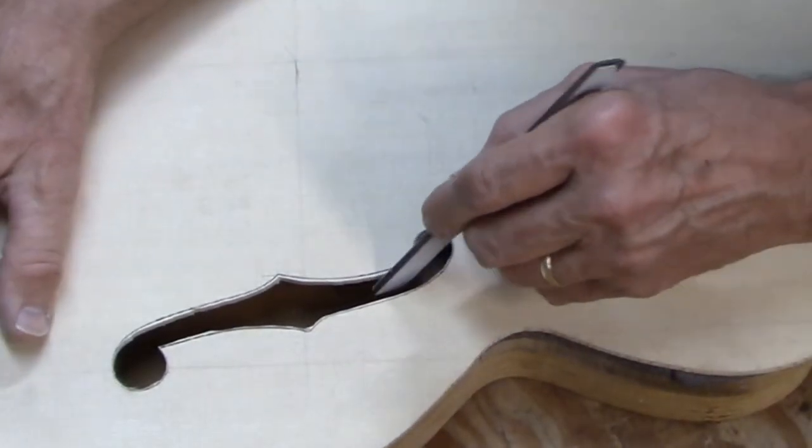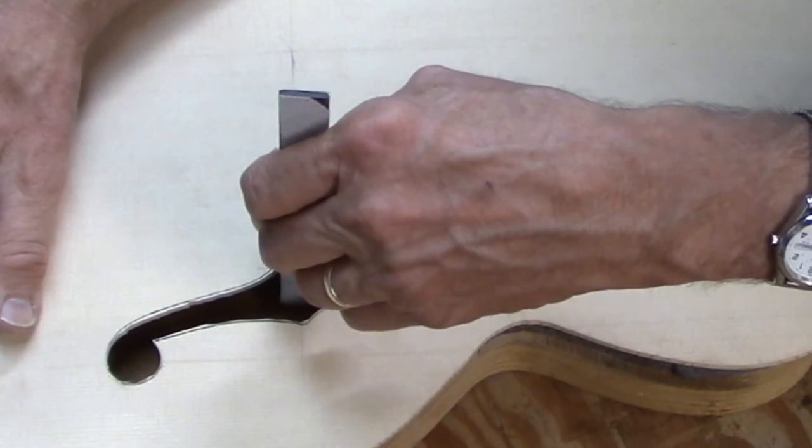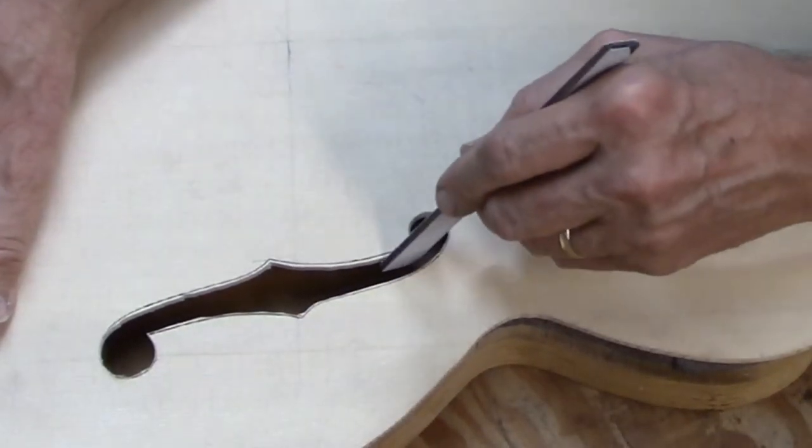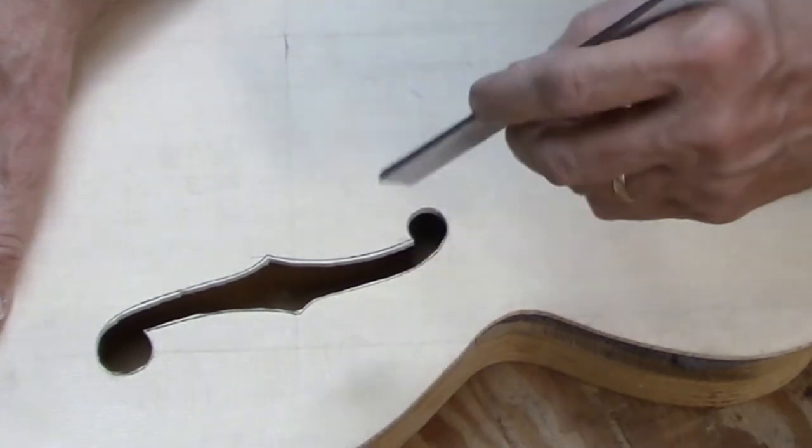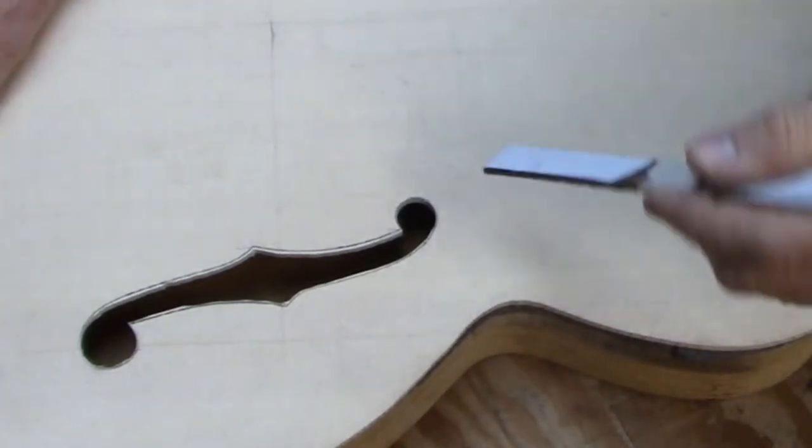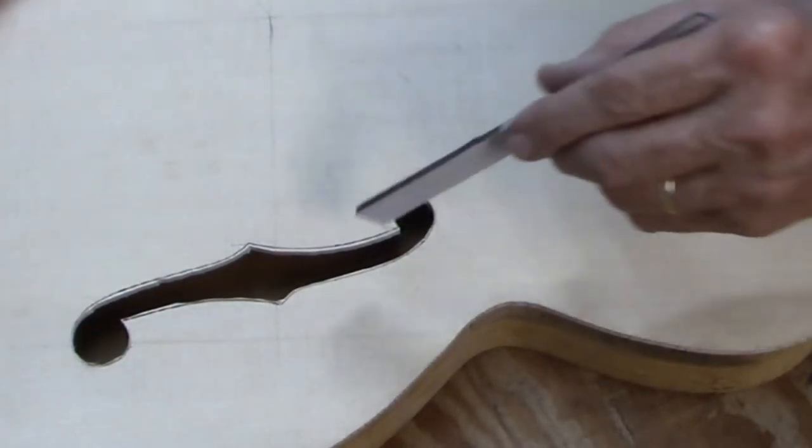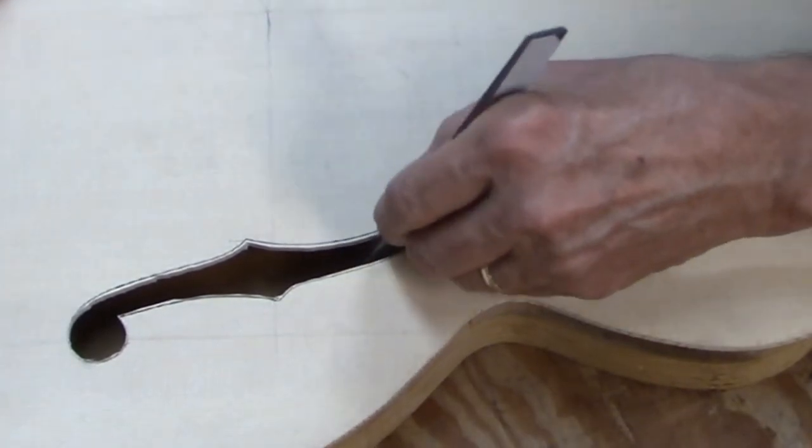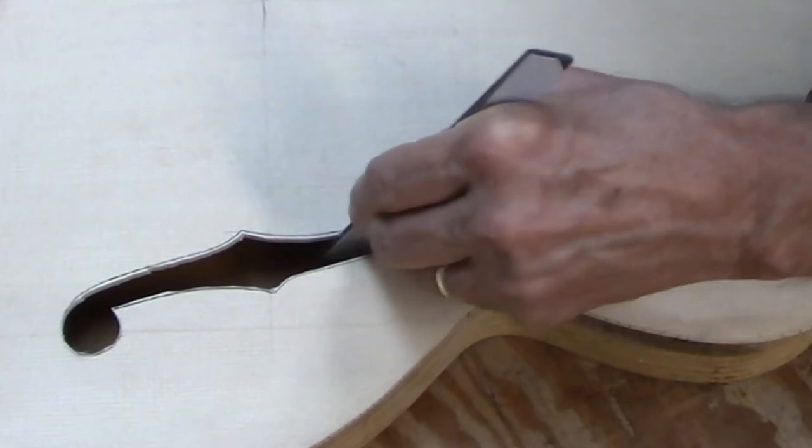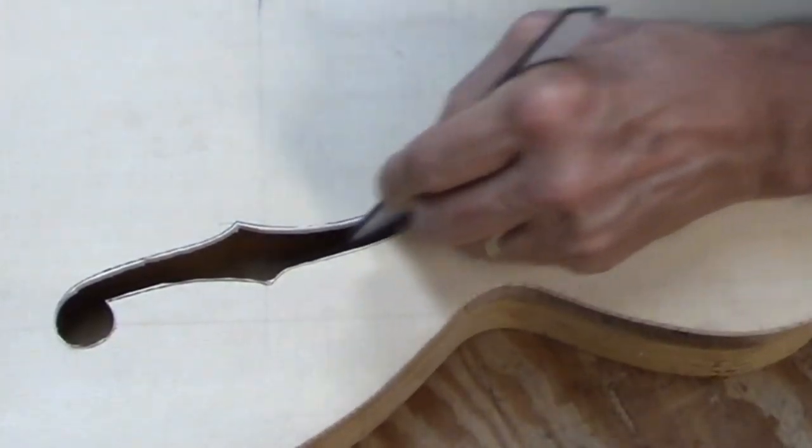So I'm going to concentrate on keeping the sanding stick vertical while I do this. I don't want to round off the edges of the holes because it would be really hard to maintain symmetry from one side to the other, and really hard to glue on the binding. So I'm just going to keep the stick vertical and sand away until I get right down to the pen marks everywhere.